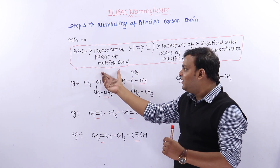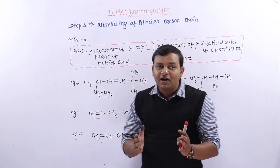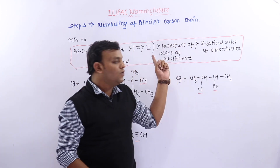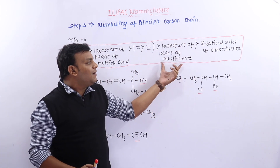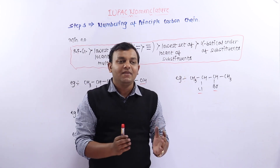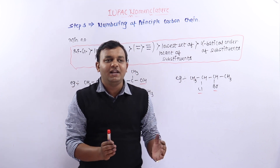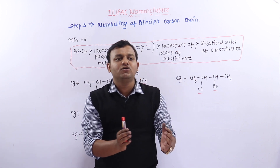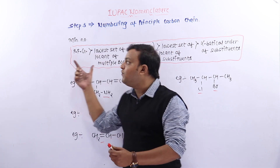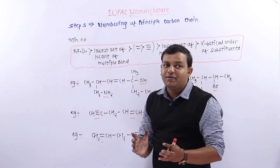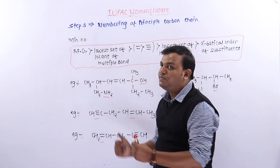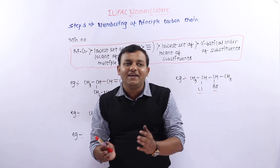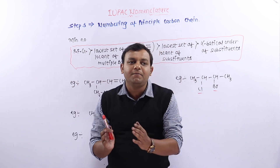अगर principal functional group नहीं है, then multiple bond को minimum number मिले। Multiple bond में अगर double या triple bond same number पर आ रहे हैं तो हम double bond को ज्यादा priority देंगे as compared to triple bond। Then कम number मिले substituent को। अगर substituent भी same number पर आ रहे हैं तो हम alphabetically follow करेंगे — जो alphabetically पहले आ रहा होगा उसे minimum number देंगे।